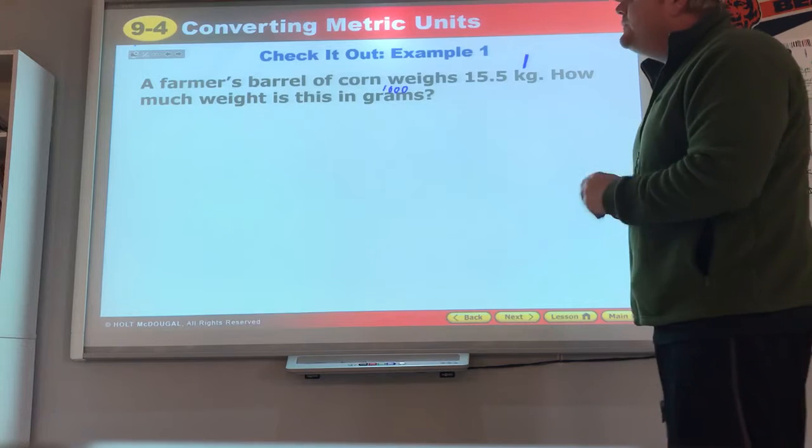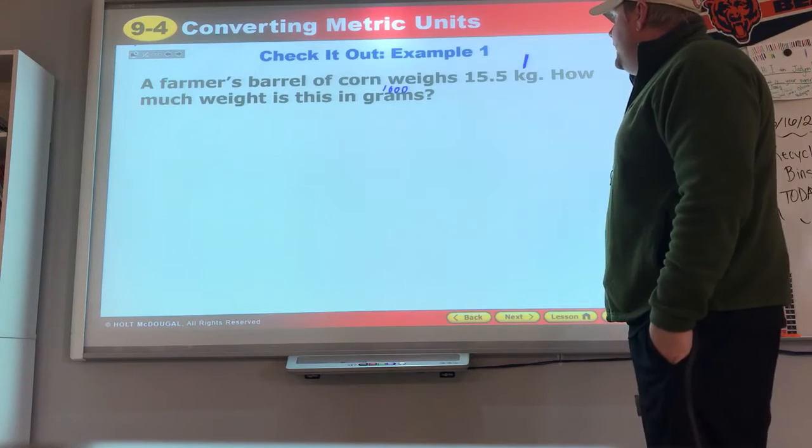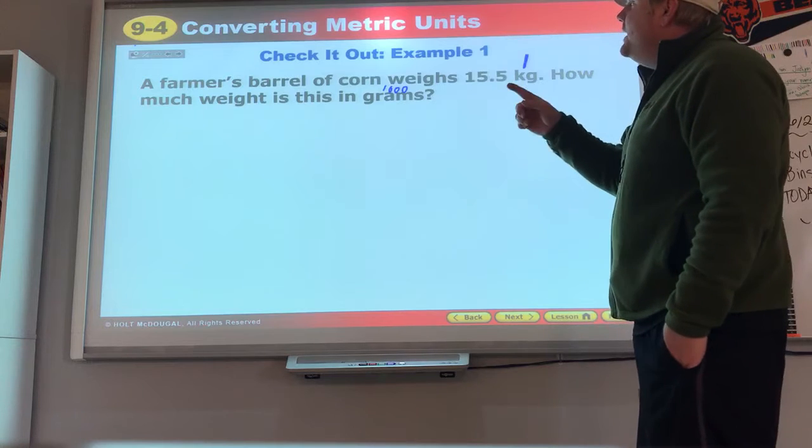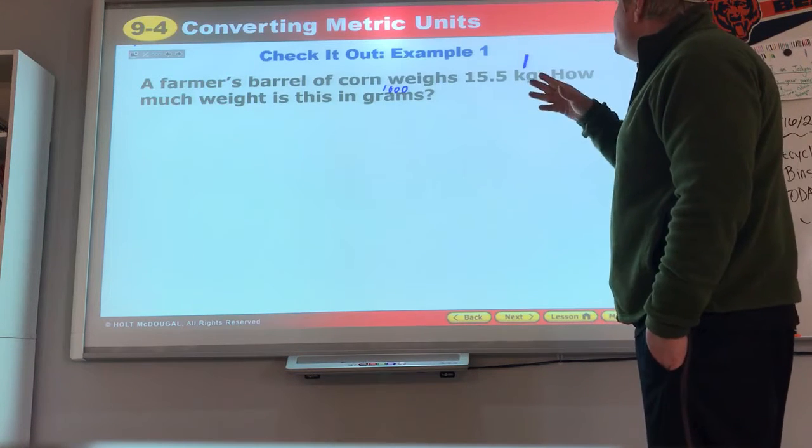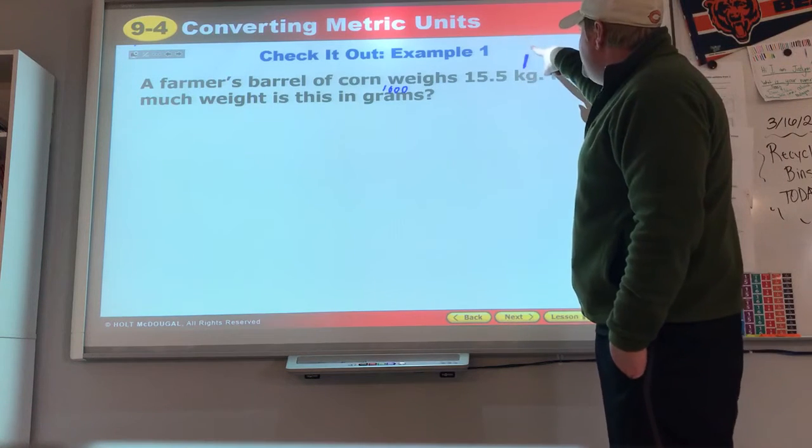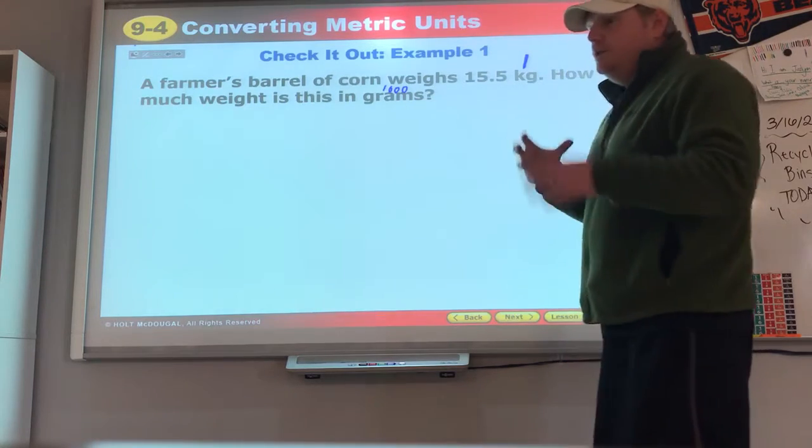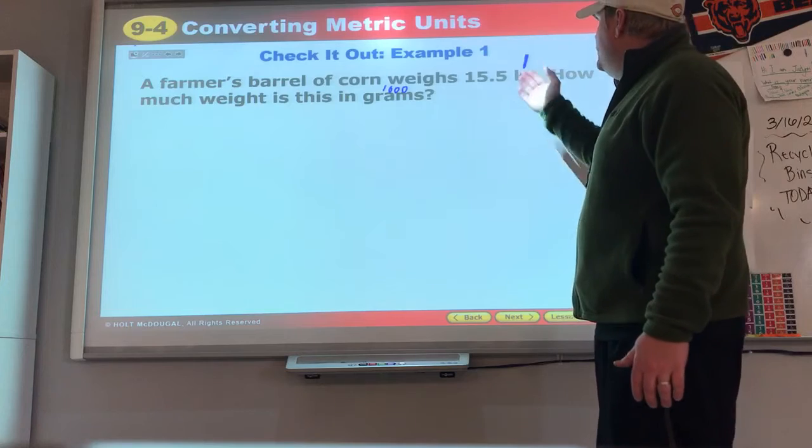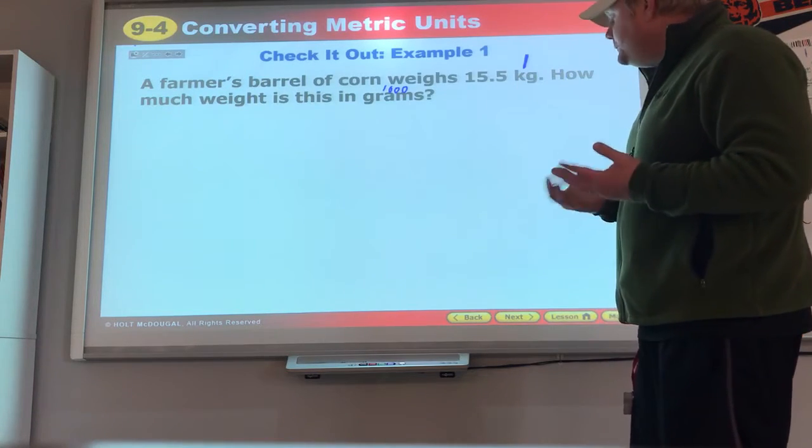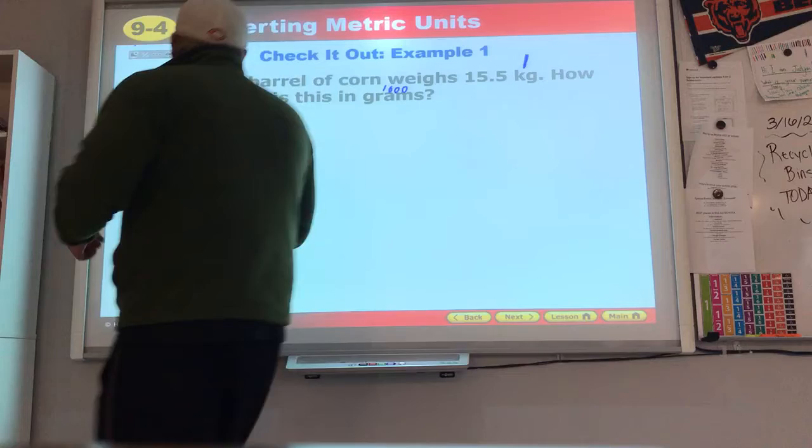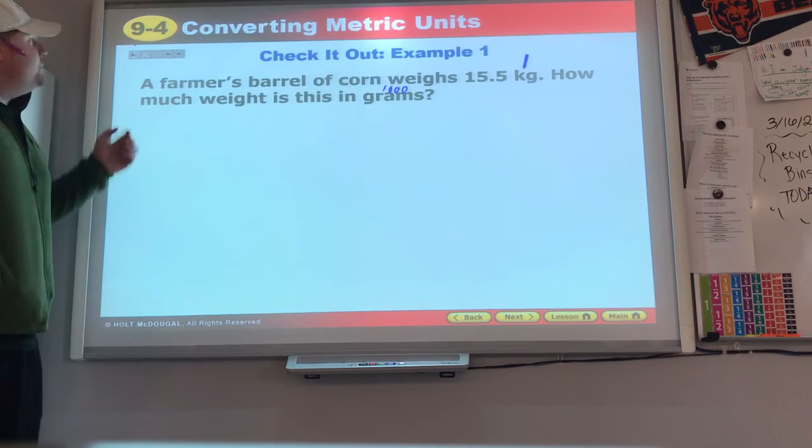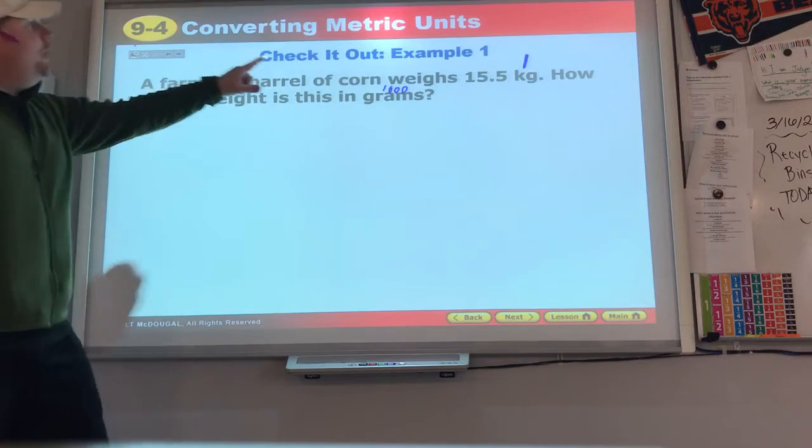A farmer's barrel of corn weighs 15.5 kilograms. How much weight is this in grams? I think I go from kilograms big to grams which is much smaller, like the one piece of bread. Kilogram is like an entire, that's much bigger than that, like a bag of potatoes.